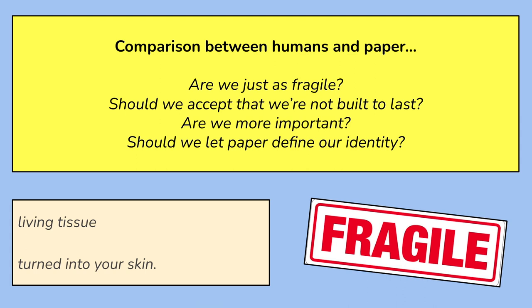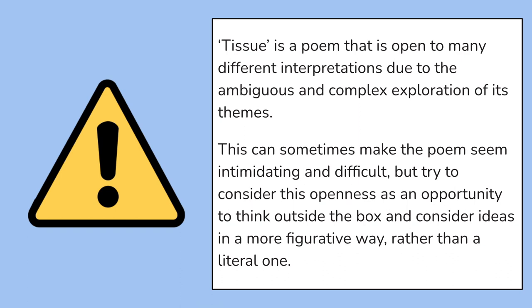Considering this comparison between humans and paper, the poem throws up these really interesting questions. Are we just as fragile as paper? Should we accept that we're not built to last? Are we more important than paper? And should we let paper define our identity? Now, it's important to note that Tissue is a poem that is open to many different interpretations due to the ambiguous and complex exploration of its themes. This can sometimes make the poem seem intimidating and difficult. But try to consider this openness as an opportunity to think outside the box and consider ideas in a more figurative way, rather than a literal one.